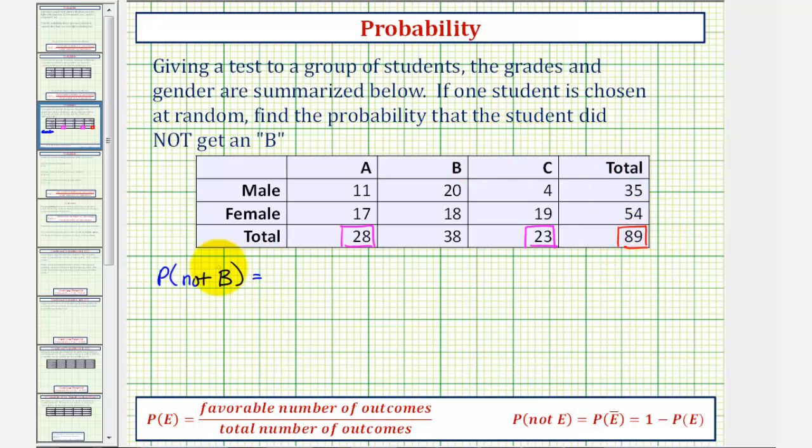So the probability that a student did not get a B would be equal to twenty-eight plus twenty-three, the favorable number of outcomes, or the number of grades that were not a B, divided by the total number of students taking the test, which is eighty-nine, which gives us fifty-one divided by eighty-nine for the probability a random student did not get a B.